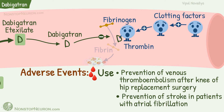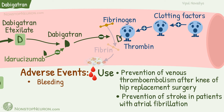The most important adverse event with dabigatran is bleeding, due to impairment of coagulation. In case of excessive bleeding, a drug called idarucizumab can be used to reverse its action. It is a monoclonal antibody directed against dabigatran that binds to it with very high affinity, thus preventing the effect of dabigatran.